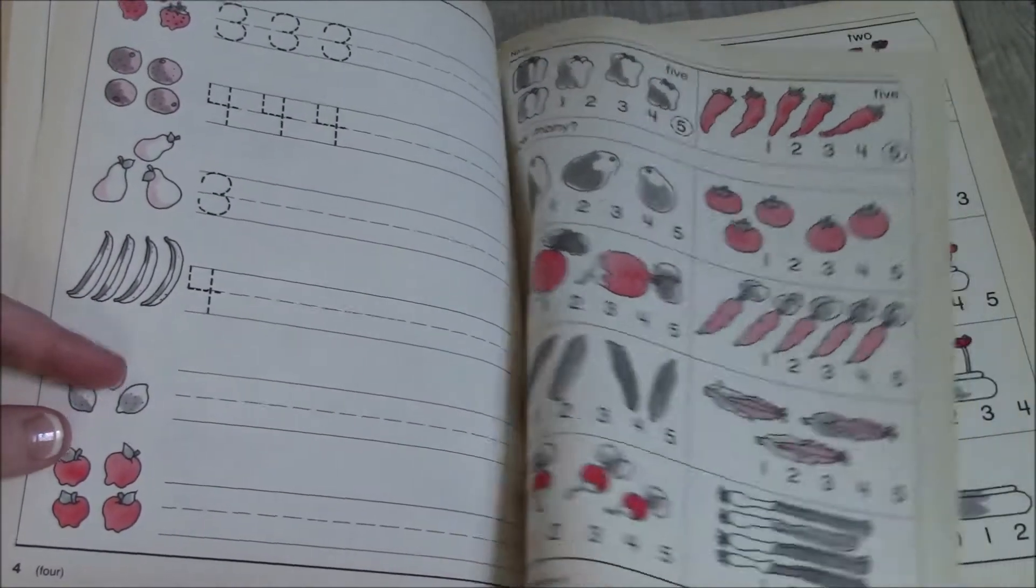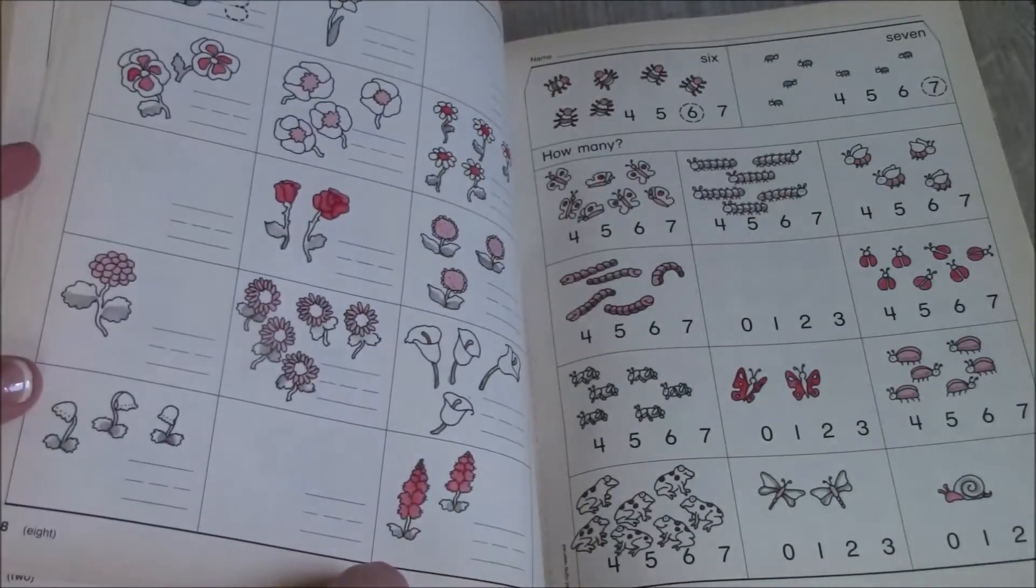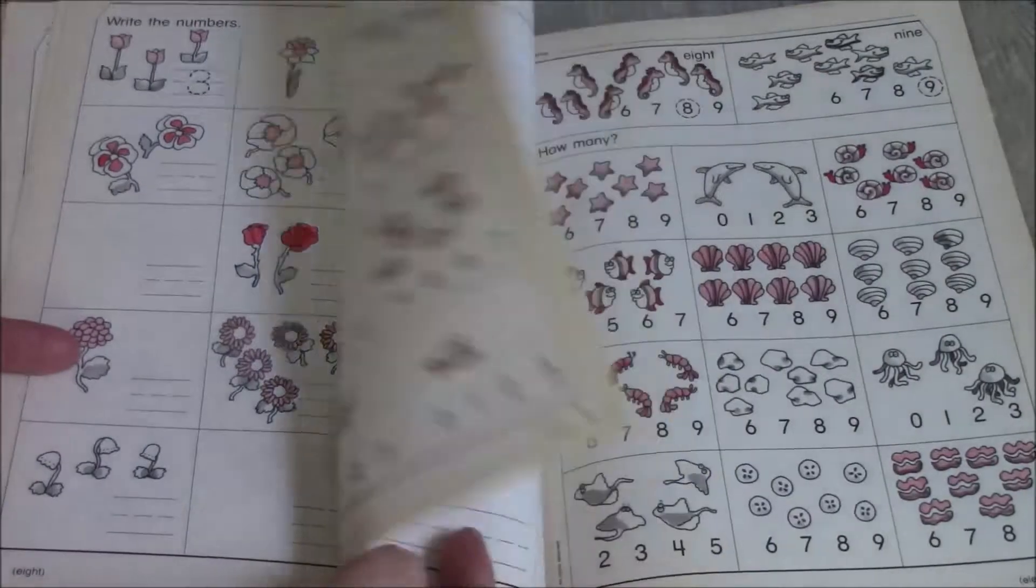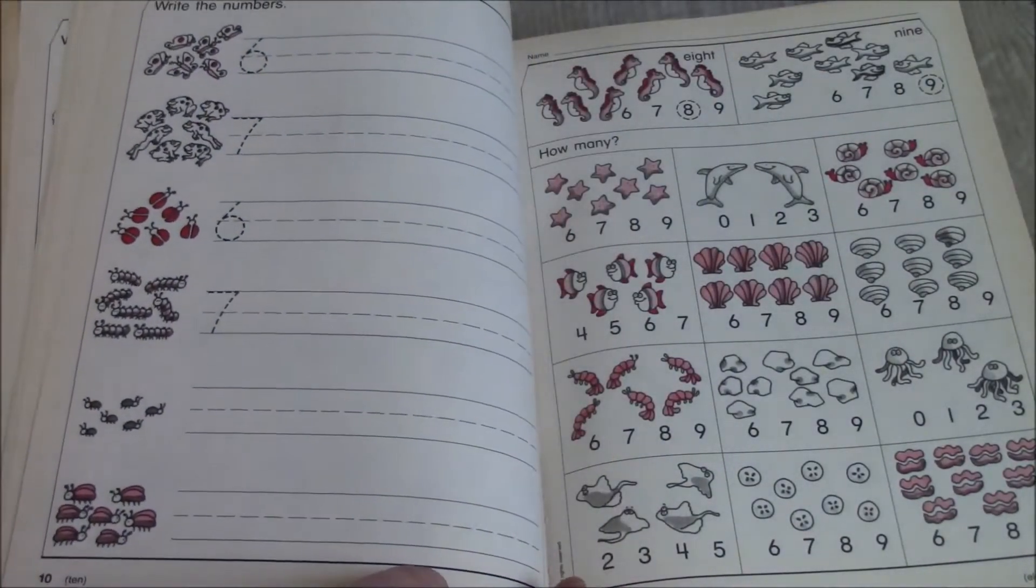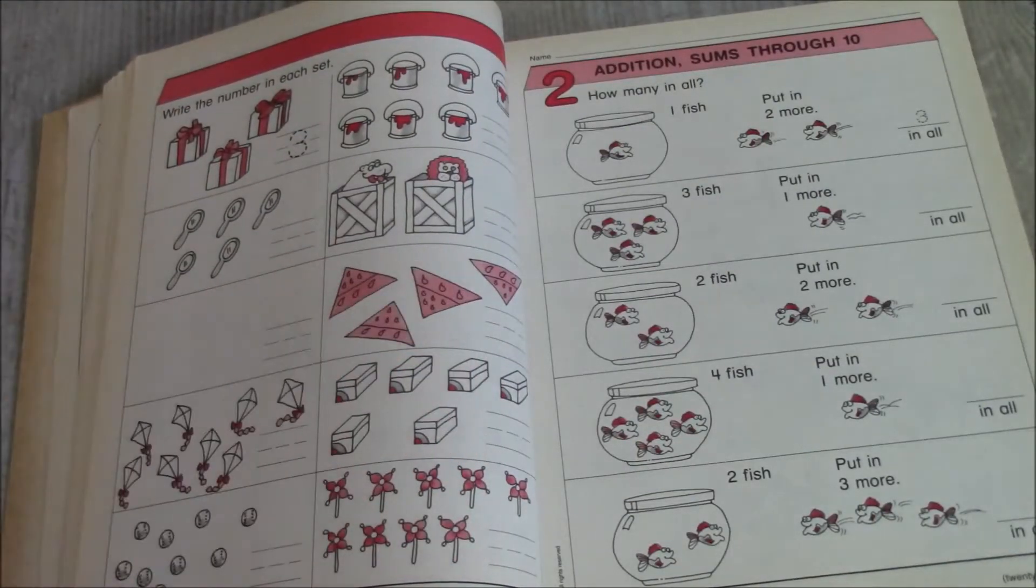And these will be a lot more work for him since he's not really writing. Again, he's four, barely five. He loves to write, but I am not pushing it so much. Their hand development is a lot better at six, seven.